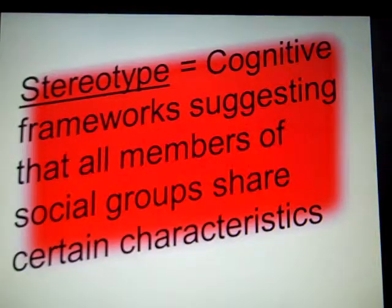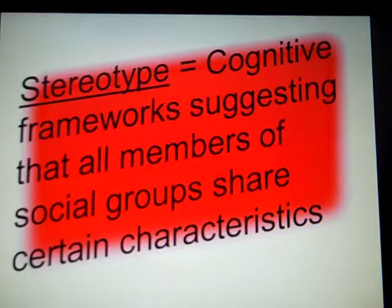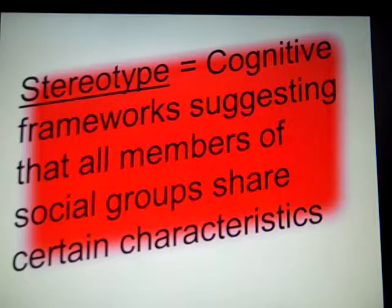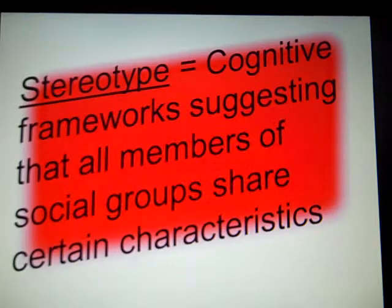A stereotype, by definition, refers to cognitive frameworks suggesting that all members of social groups share very specific or certain characteristics. This idea of stereotyping is going to underlie our discussion in the next several videos. We do it as private citizens, as casual observers. Law enforcement officials are guilty of stereotyping people, and that directly impacts arrest rates, conviction rates, incarceration — judges, lawyers. We all are guilty of stereotyping to some extent. That's a good definition to have in your notes.